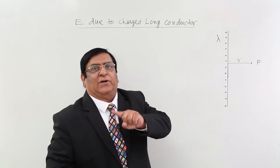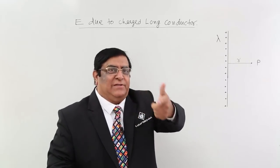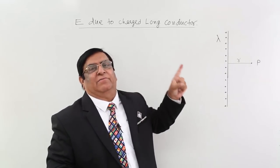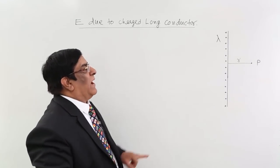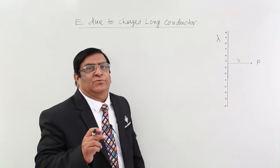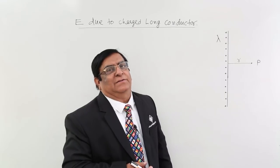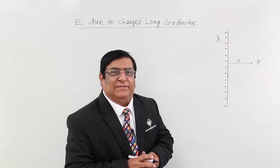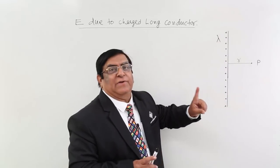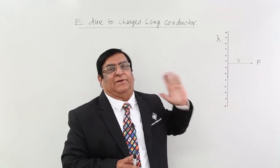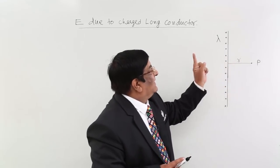Here we will apply Gauss's theorem and that will make it very easy. Let us start with step number 1. Please see the previous lecture if you do not remember the steps. According to step number 1, we have to imagine and consider a Gaussian surface, and the condition for a Gaussian surface is symmetry. So for this conductor, what will be the symmetrical surface?